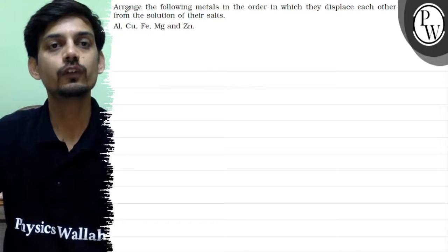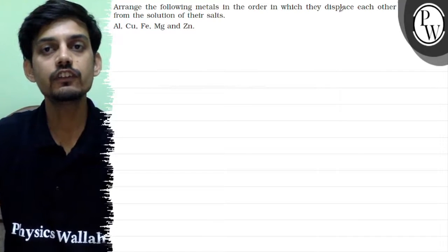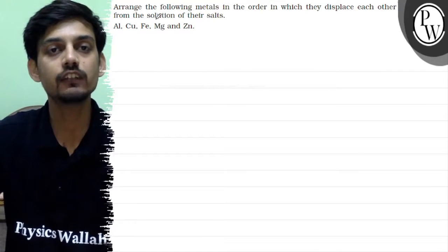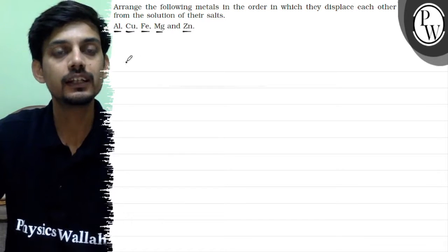Hello, the question says arrange the following metals in the order in which they displace each other from the solution of their salts. The metals given are aluminum, copper, iron, magnesium, and zinc. Let's solve the question.